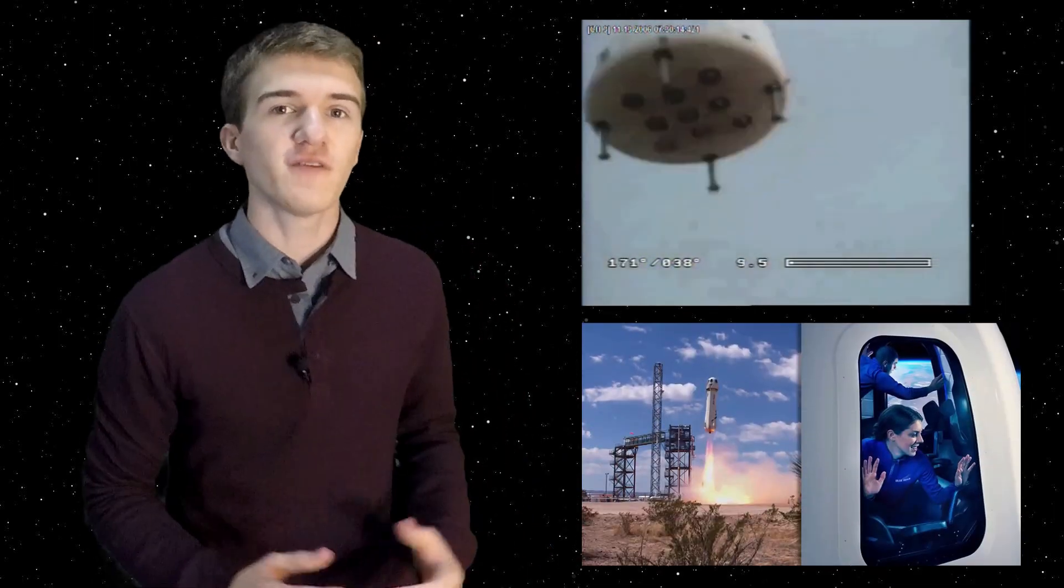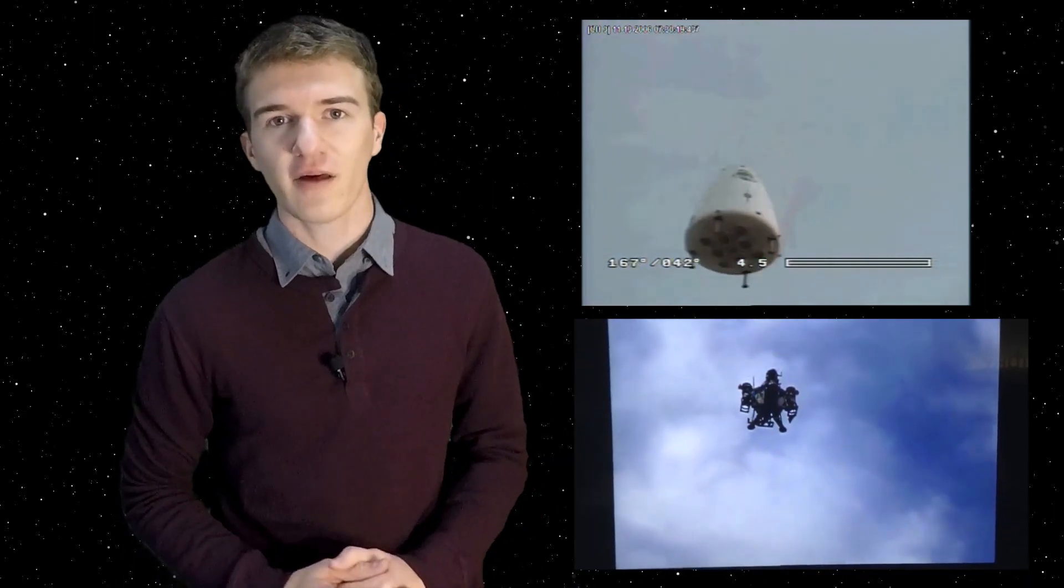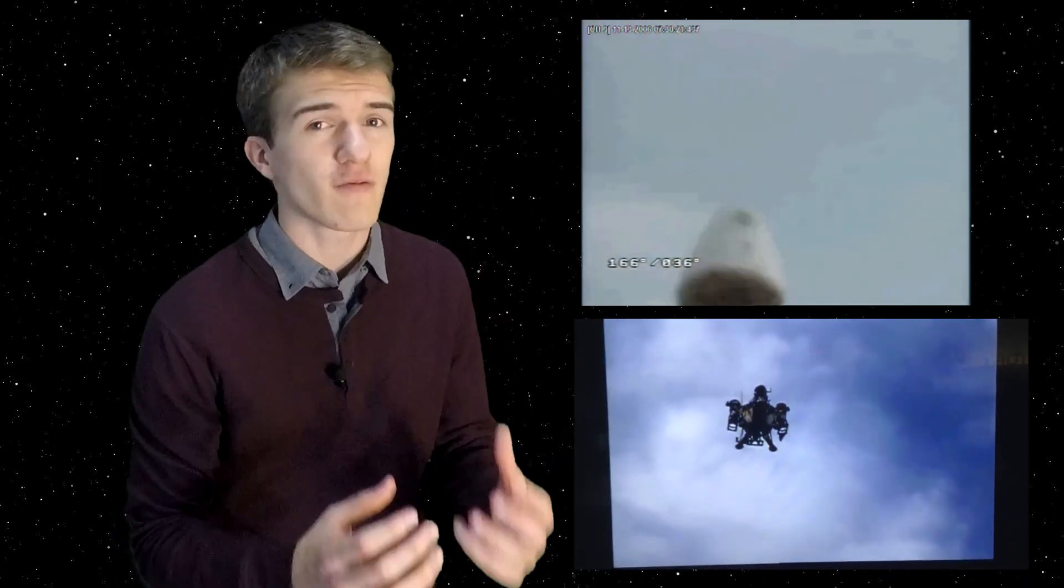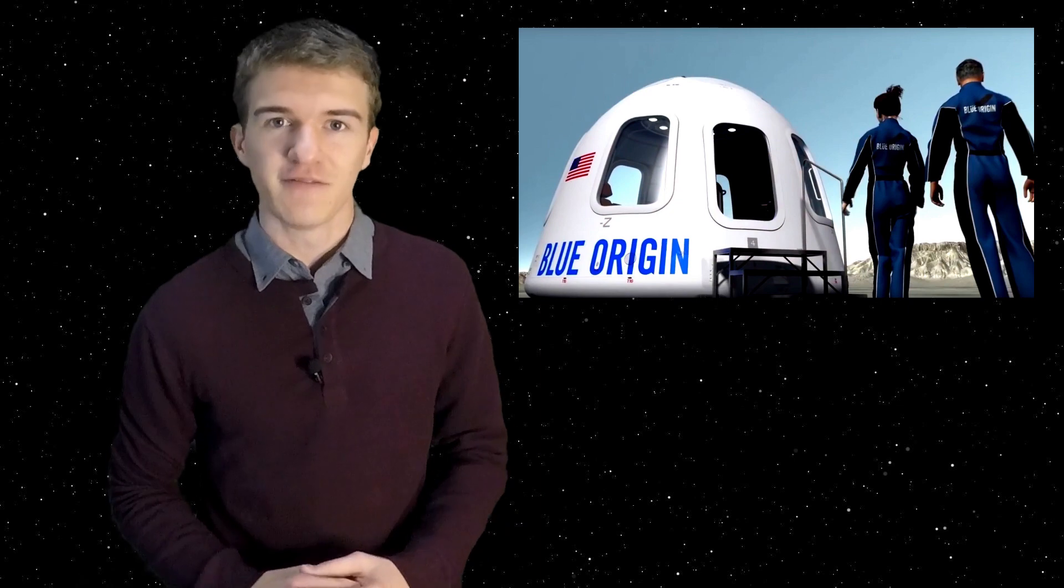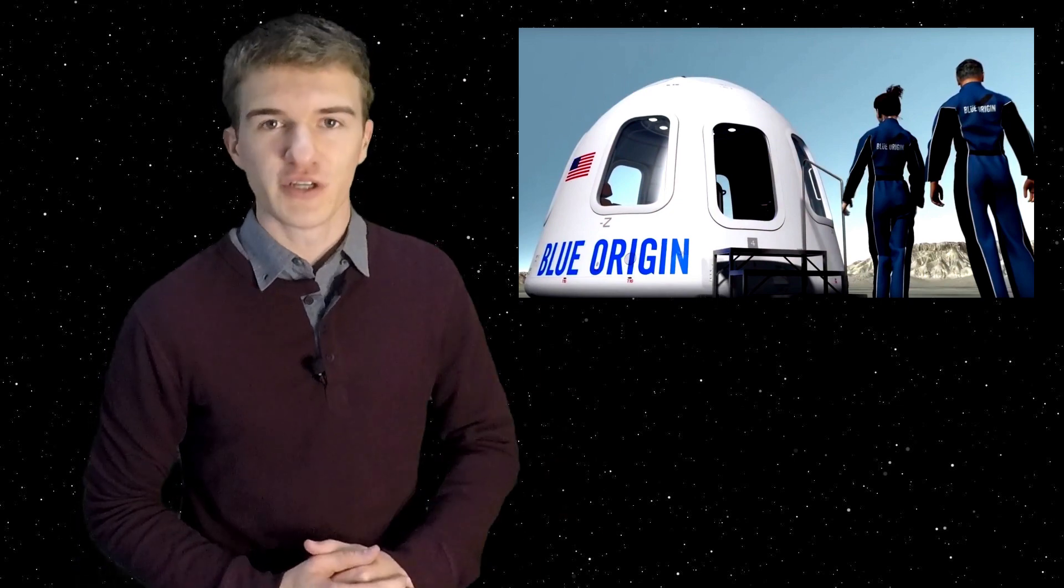In the previous video on the history of Blue Origin, we discussed the Sharon and Goddard test vehicles that they had developed to see how well they could create rockets. In this video we're going to continue with the New Shepard project and see what new rocket engines they had to develop, what new tests they were able to do, and what other companies they worked with.